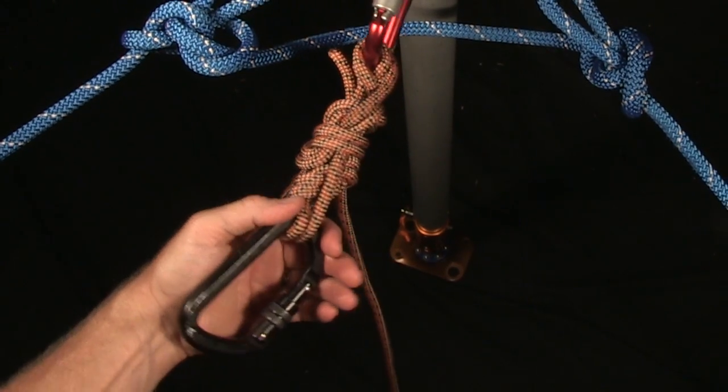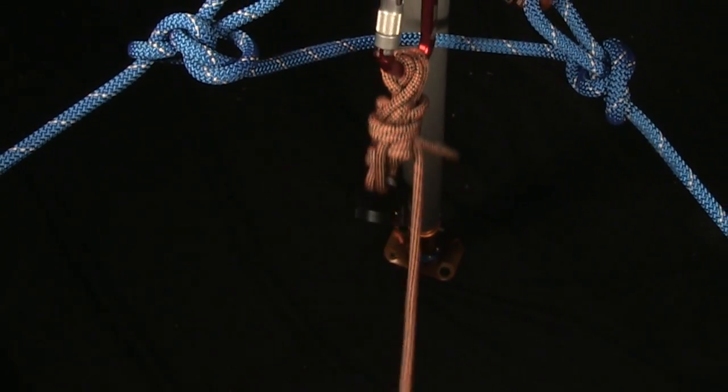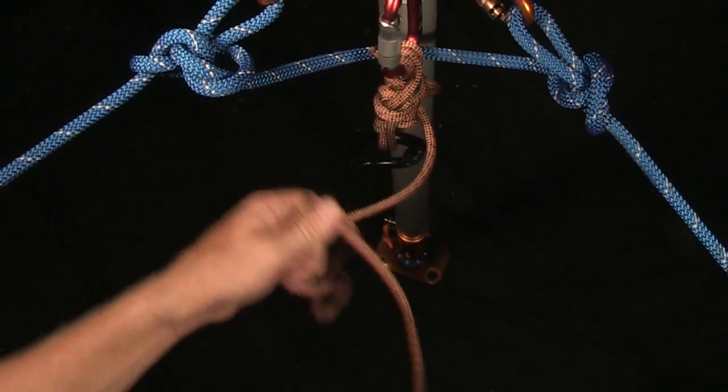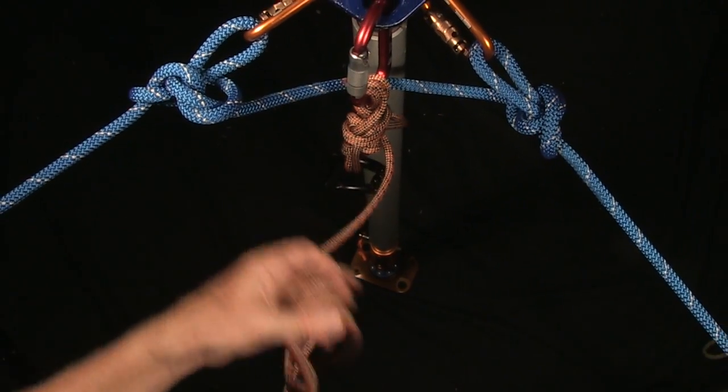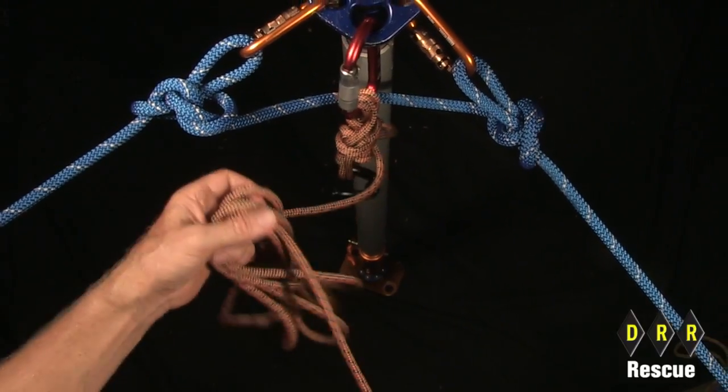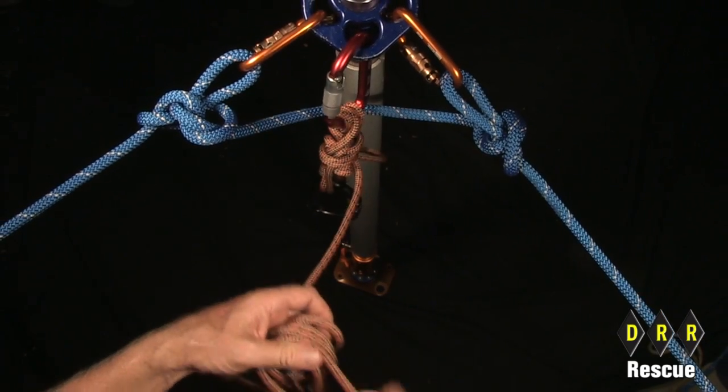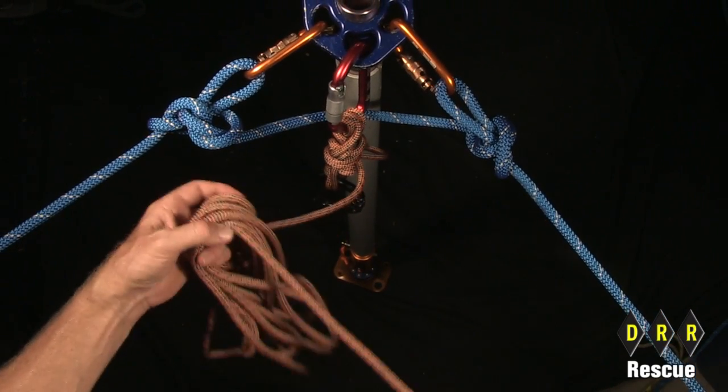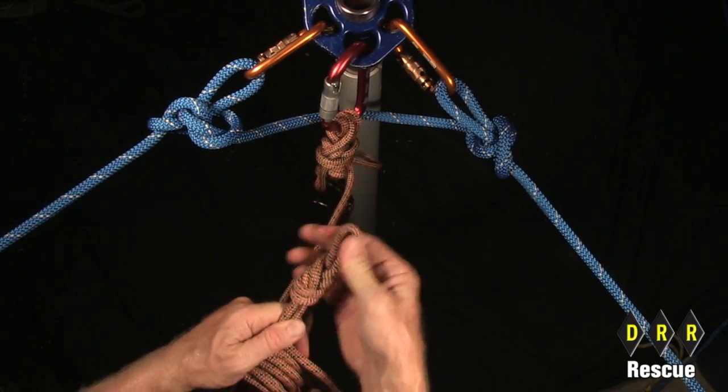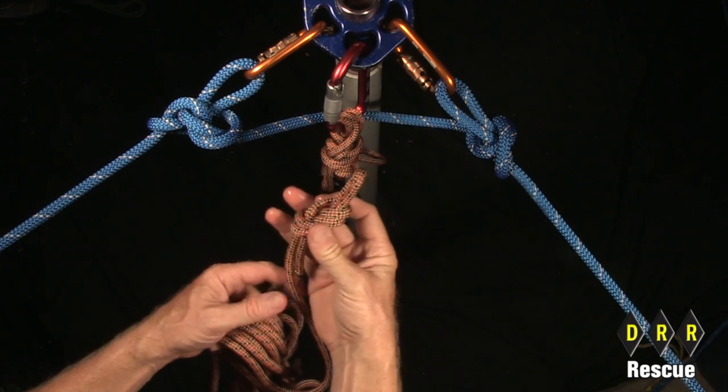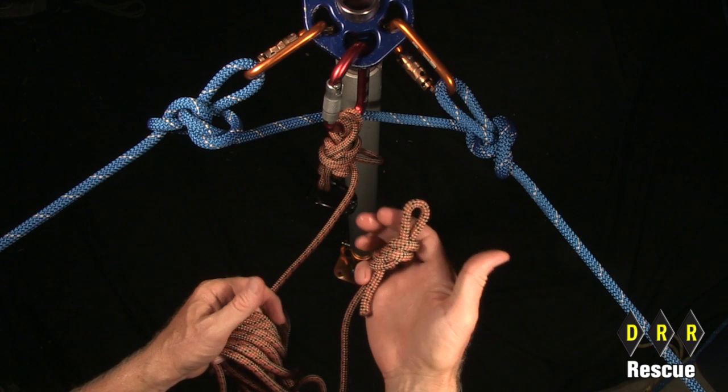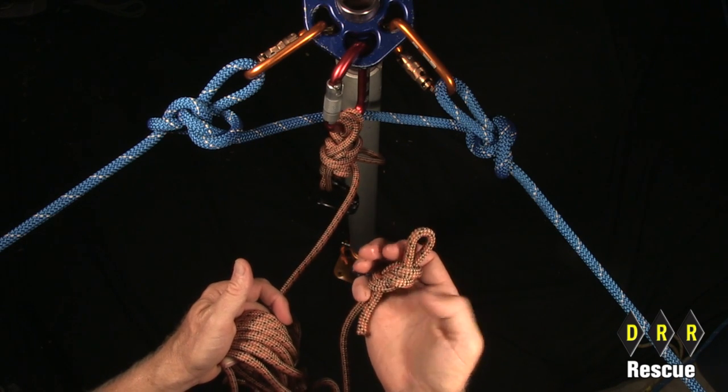And then you take the other end, and there should be a figure 8 on a bite in this end. And when you go to deploy this, you'll take this figure 8 on a bite and clip it into the anchor so that there's no way that it can get away from you.